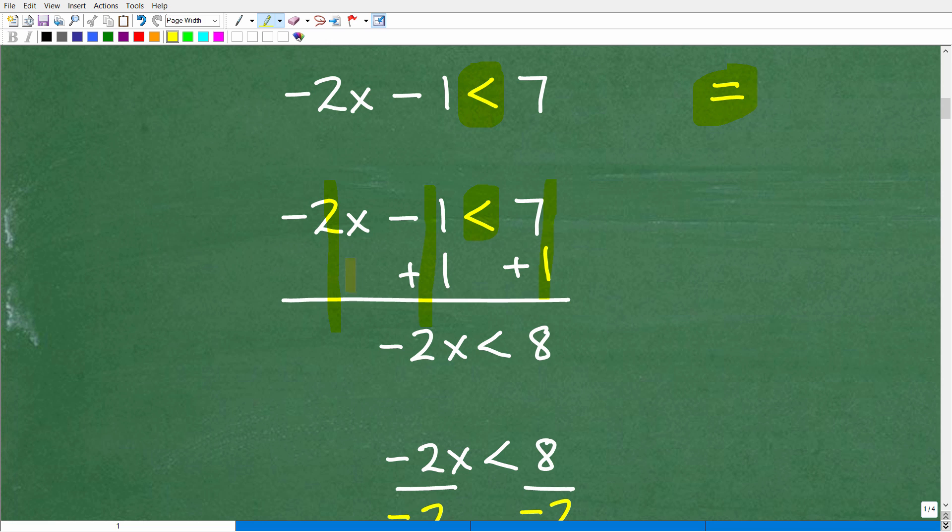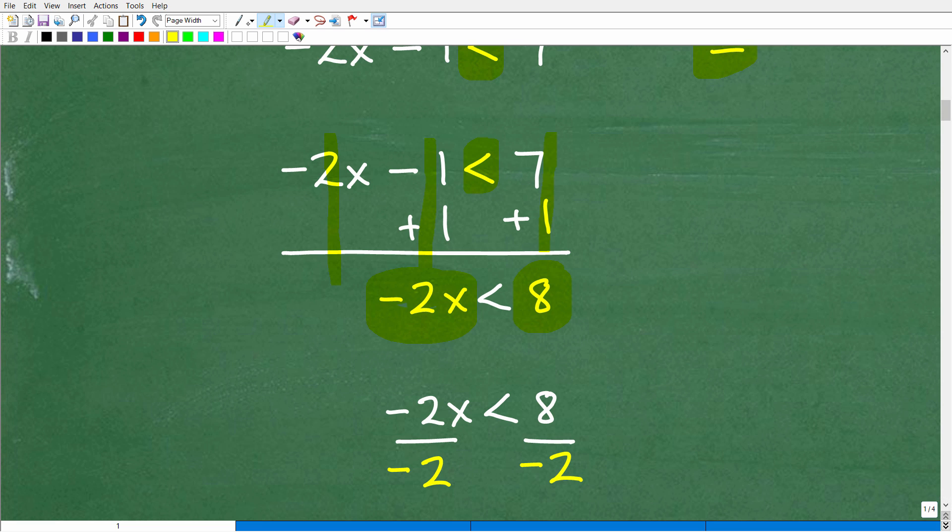So I get negative 2x plus 0 is just negative 2x. The 1, this negative 1 goes away. And I have 7 plus 1 is equal to 8. All right. So just thinking of this as if this was negative 2x is equal to 8, I would just divide both sides of the equation by negative 2, and I would have my answer. But what am I doing in this step? I'm dividing by a negative number, okay?